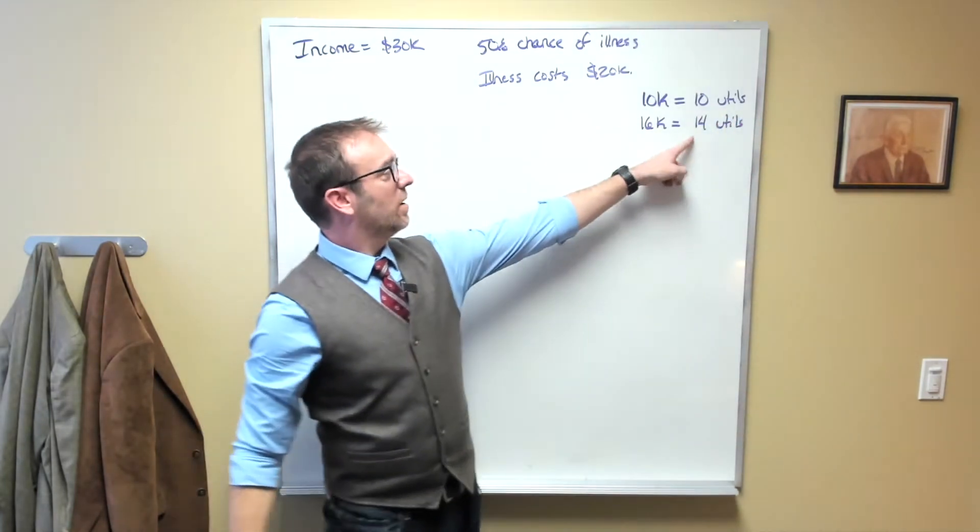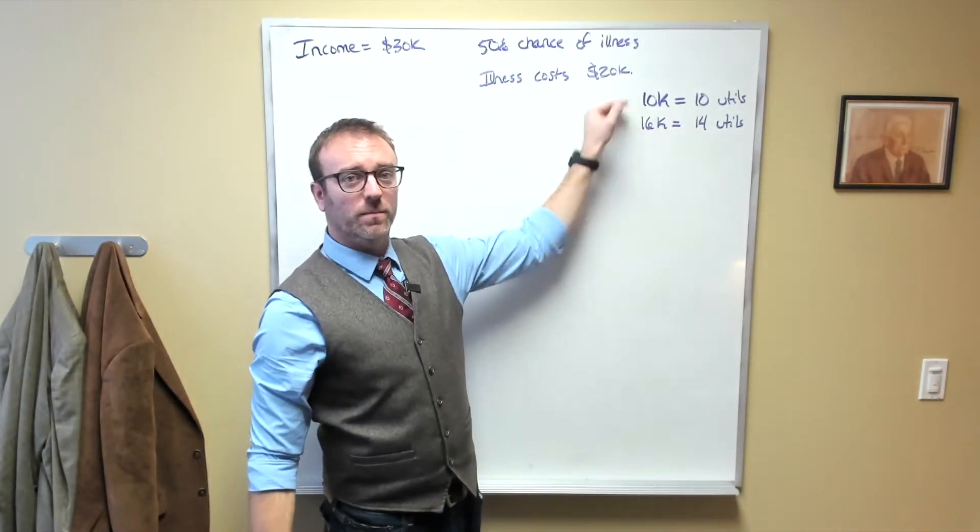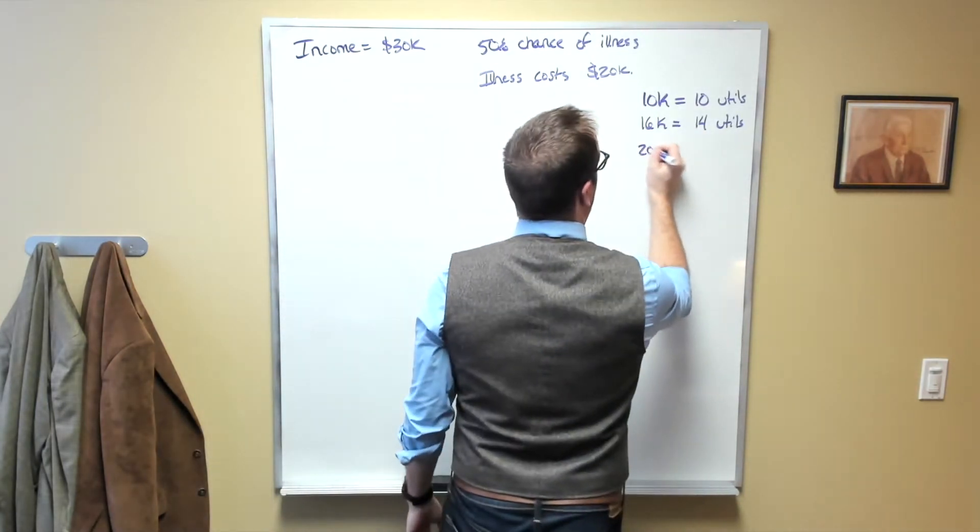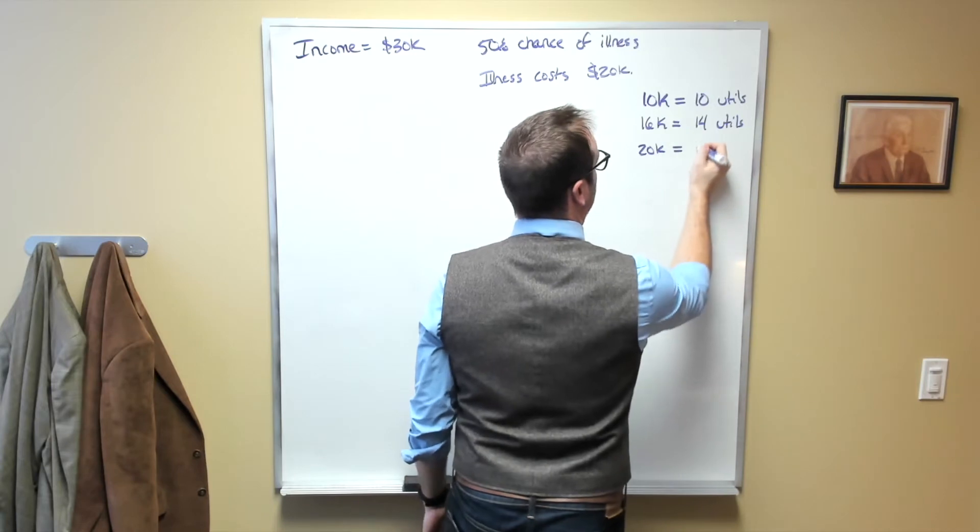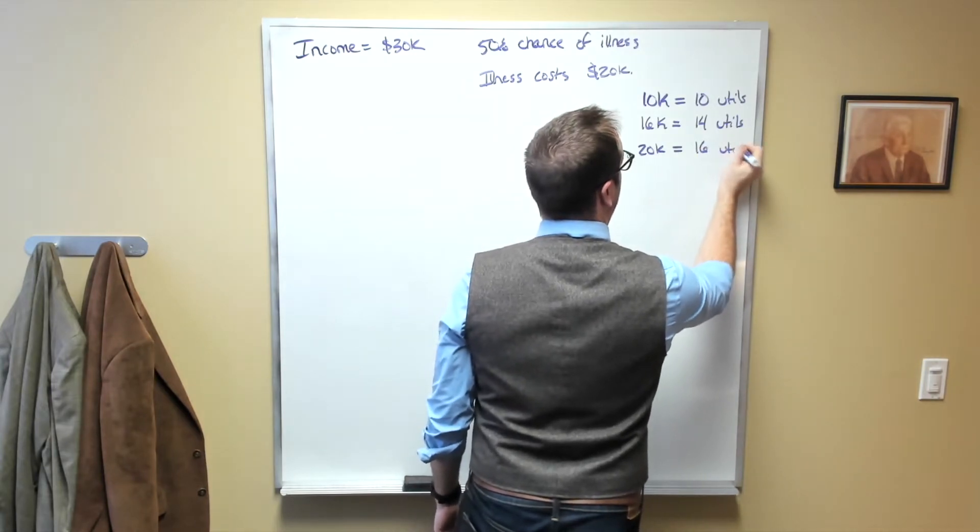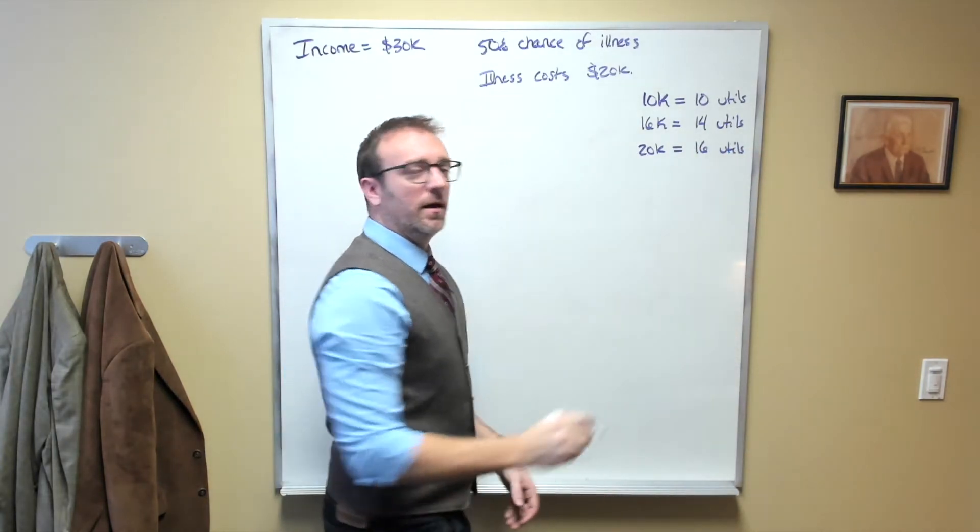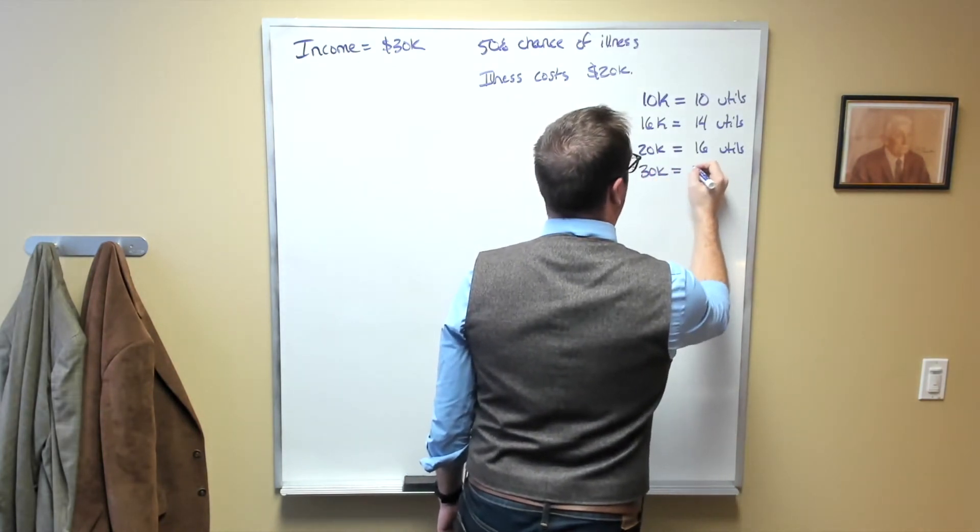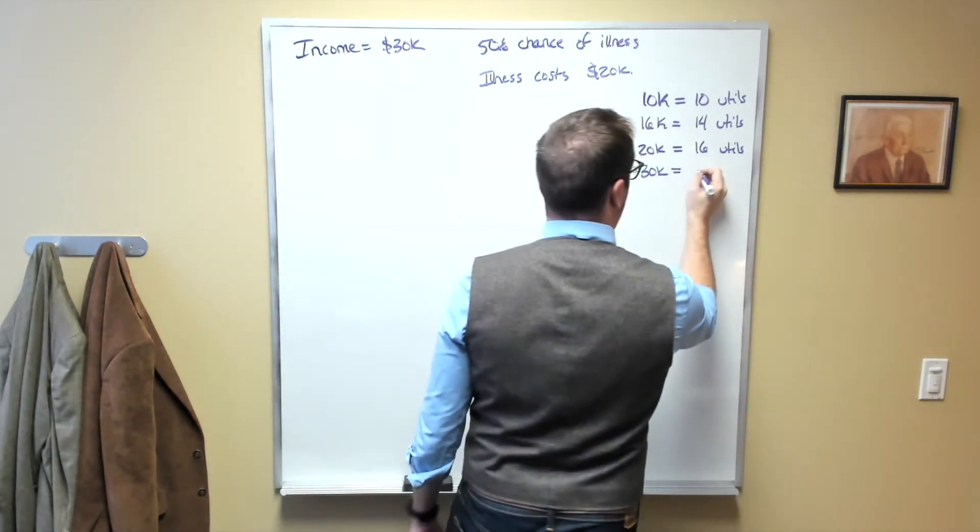So again, it's gone up, right? We have more money and our happiness has gone up. If you have $20,000, that would be equal to 16 utils. And if you have $30,000, that would be equal to 18 utils.